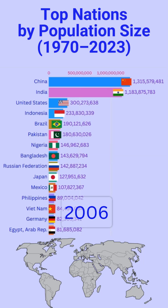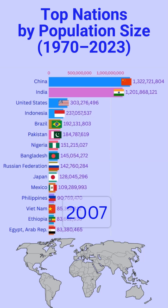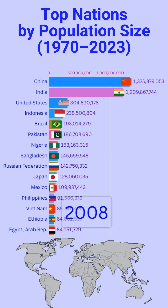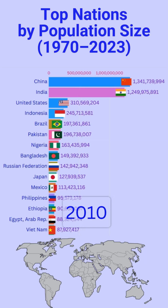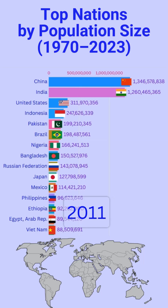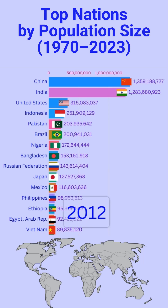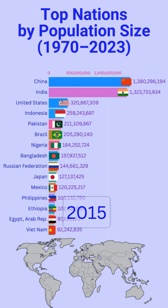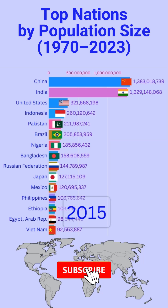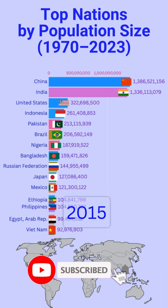For aging nations, strategies like automation, immigration, and education can ease economic pressures. The global population story is one of contrasts — growth, decline, and resilience. Together, let's embrace sustainability and collaboration to build a balanced future. Like, subscribe, and stay tuned for more.